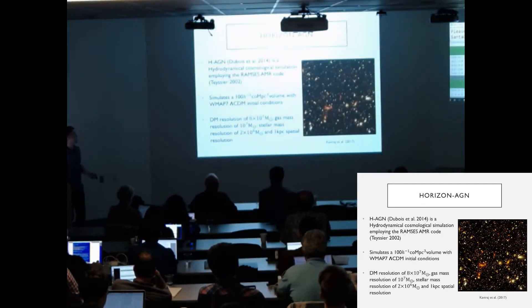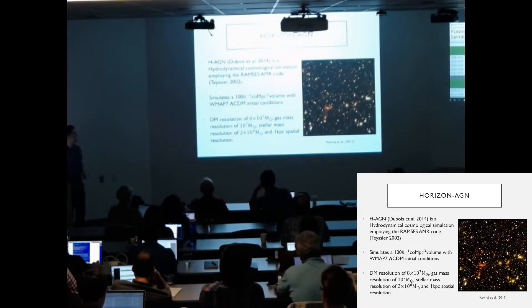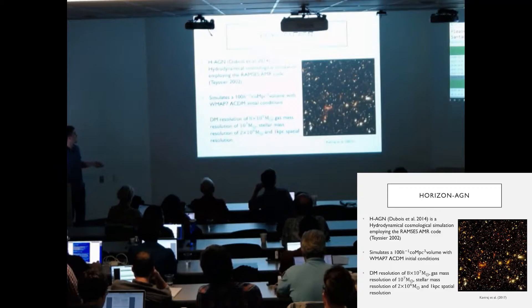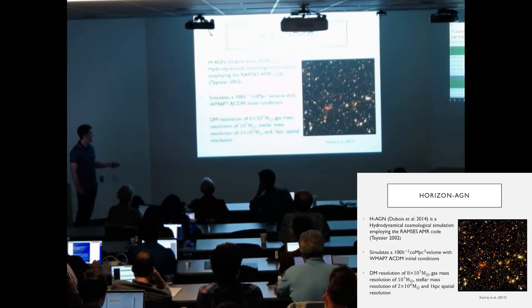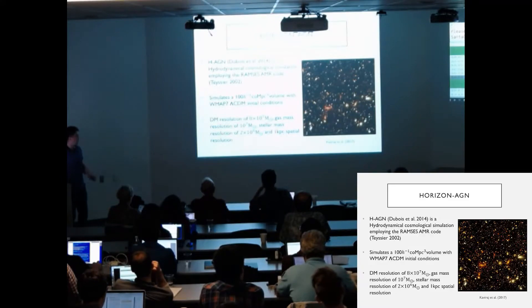To answer this question we use Horizon AGN. Horizon AGN is a hydrodynamical cosmological simulation employing the Ramses AMR code. It simulates a 100 megaparsec cubed volume with WMAP7 lambda CDM initial conditions. It has a dark matter resolution of 8 times 10 to the 7, a gas mass resolution of 10 to the 7, stellar mass resolution of 2 times 10 to the 6, and a 1 kiloparsec spatial resolution.